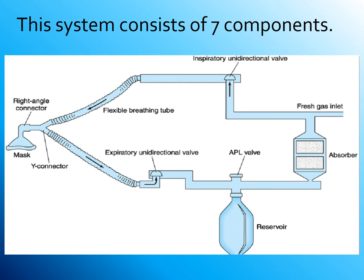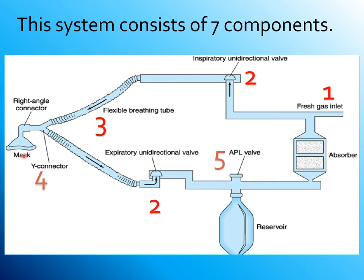The components of the circle system are: first, the fresh gas inlet; second, the inspiratory unidirectional valve and the expiratory unidirectional valve; third, flexible corrugated breathing tubes; fourth, the Y-connector which connects both tubes to the patient; fifth, the airway pressure relief valve or expiratory valve; and of course the reservoir bag, and the absorber or canister that contains the soda lime.